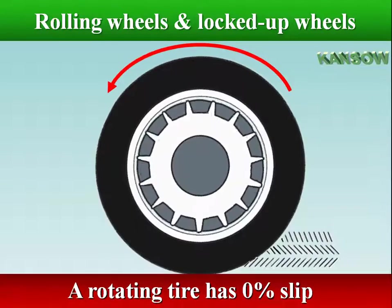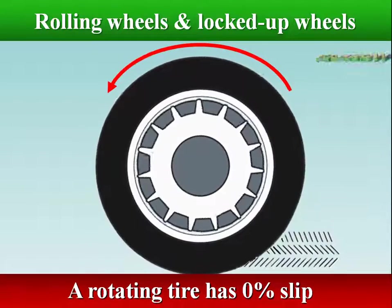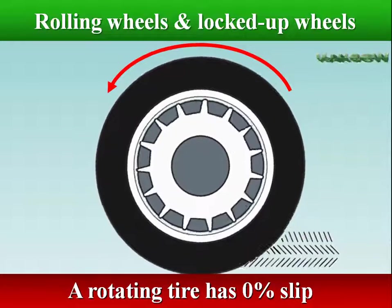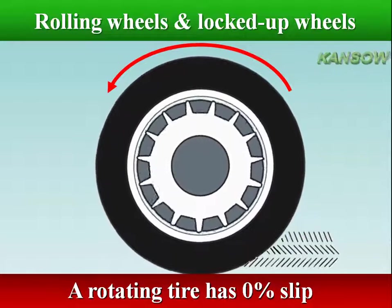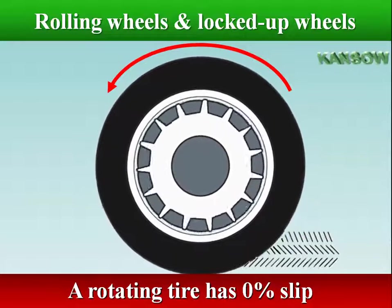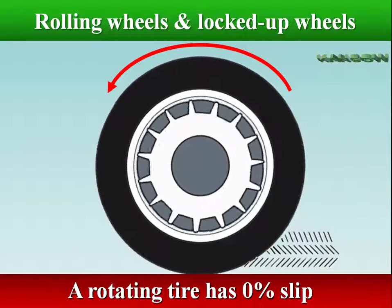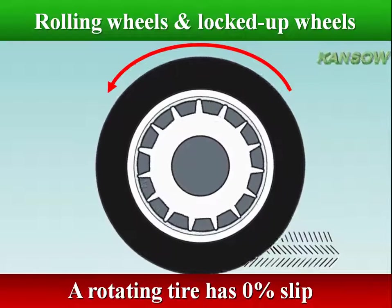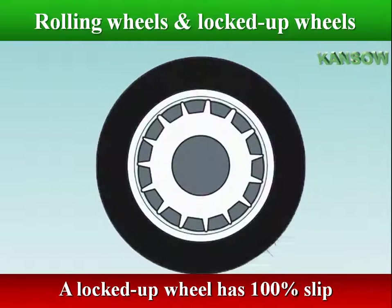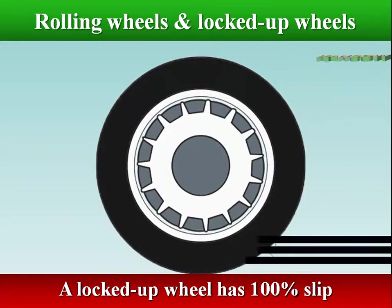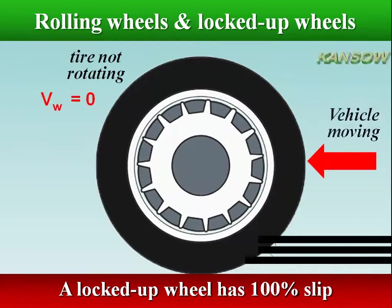Maximum braking traction occurs when tire slip is between 10% and 20%. A rotating tire has 0% slip and a locked-up wheel has 100% slip. Wheel locking occurs when the wheel has no rotational speed but still displaces either longitudinally or laterally.